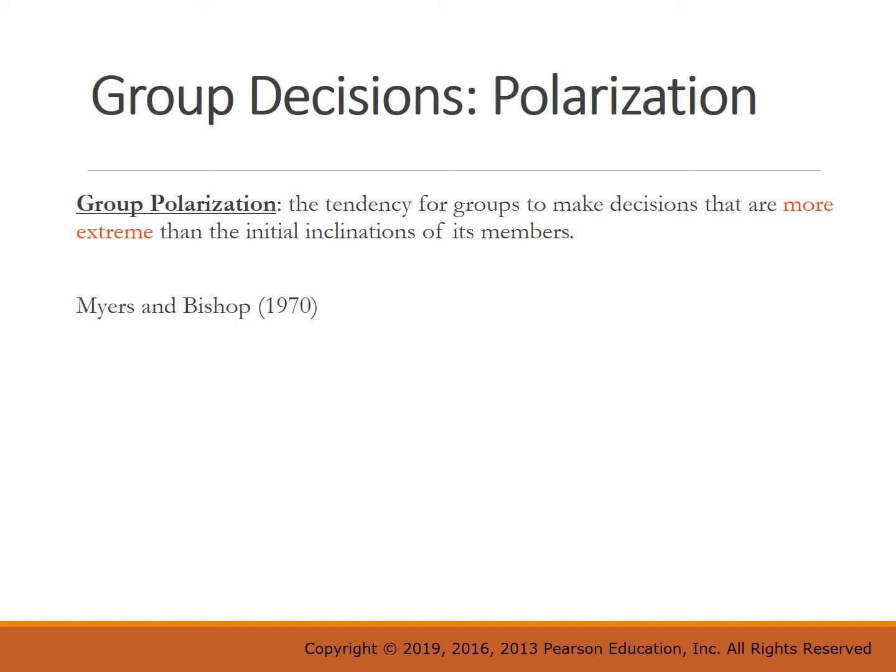Another way to think about polarization: if all members of a group taste a cookie and rate it on a scale of one to ten, they may all think it's pretty good and rate it a seven. However, after discussing it, as a group they might rate it a nine — showing they've become more polarized. Or it could go the other way: if the average was a three, after discussion they might all decide it's a one. That's the polarization that occurs.